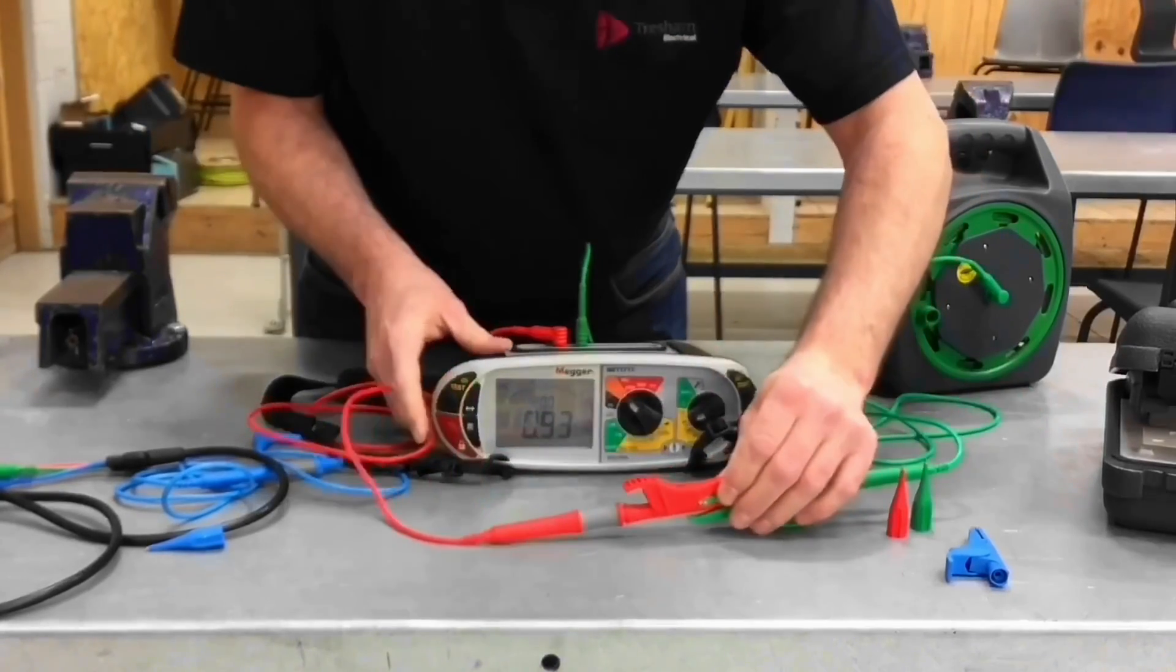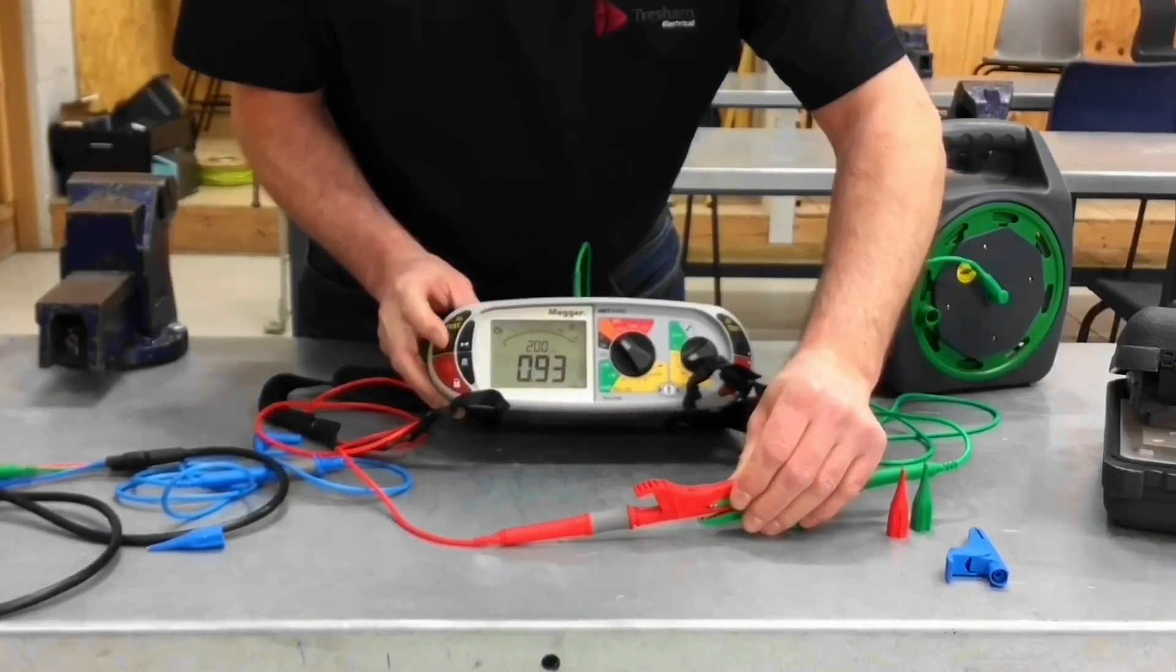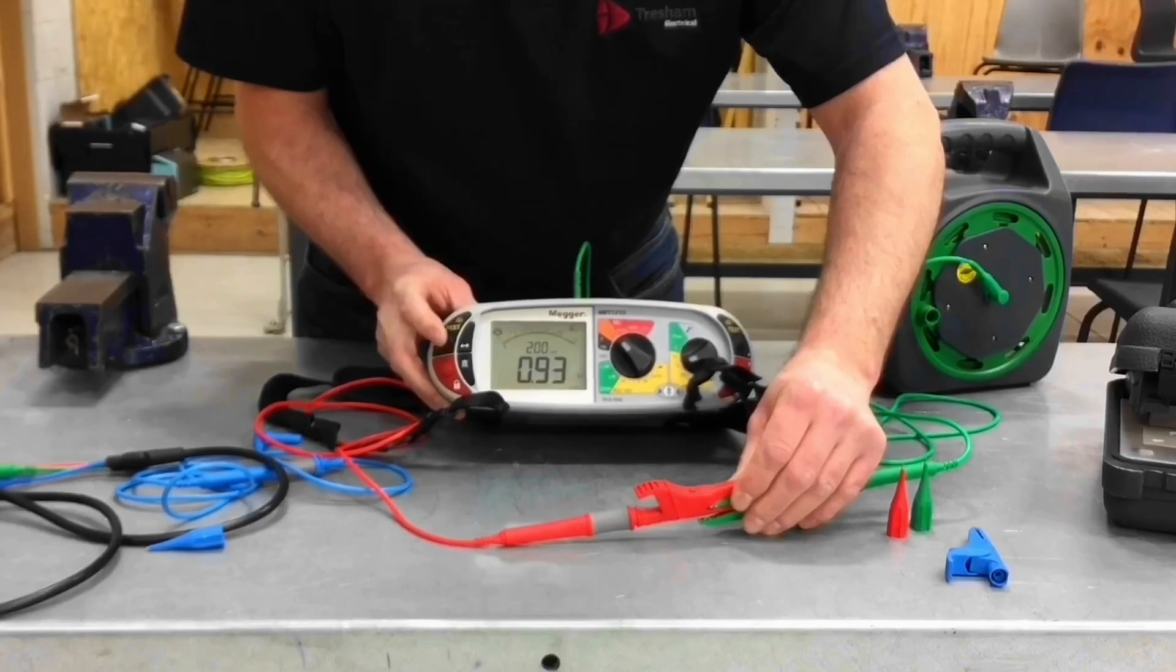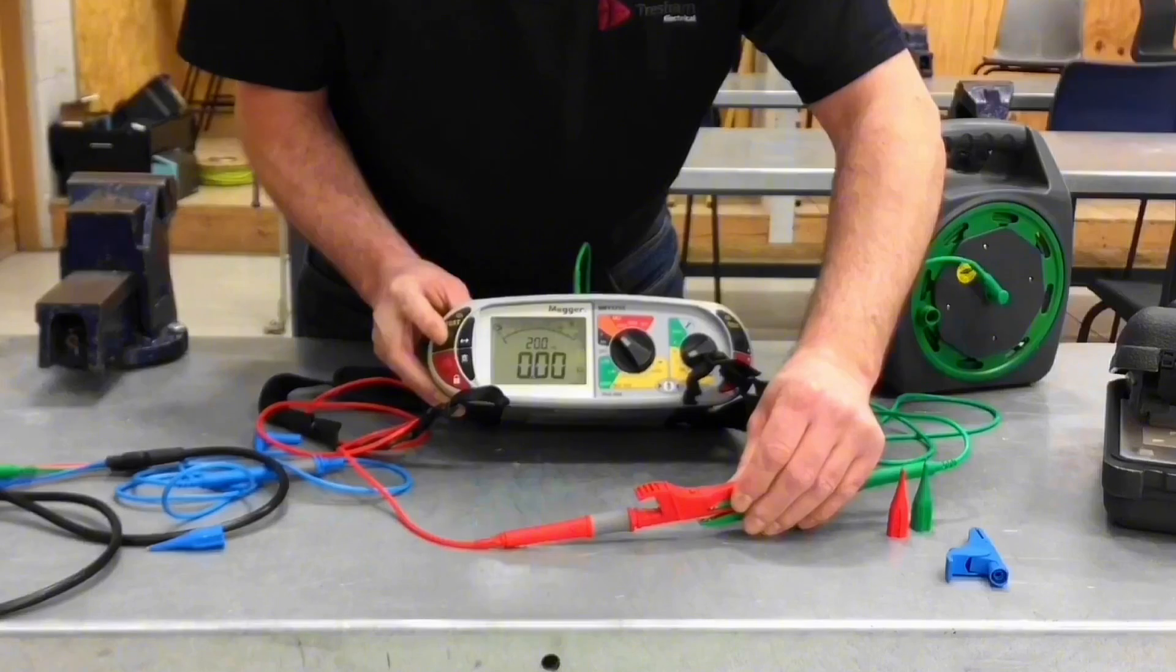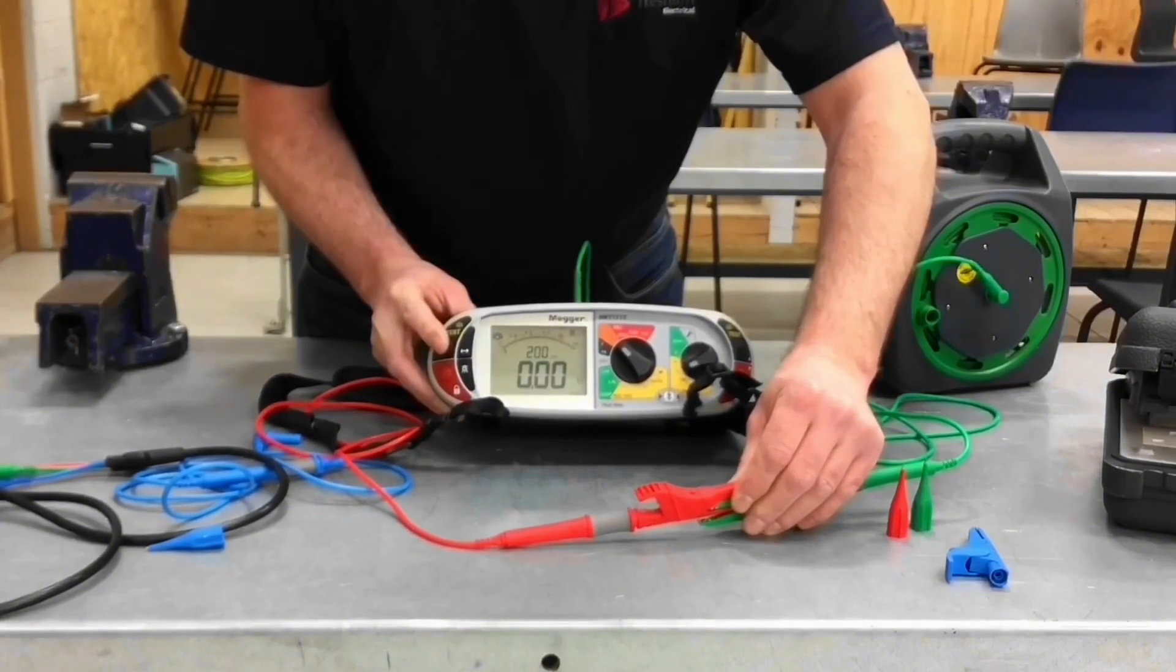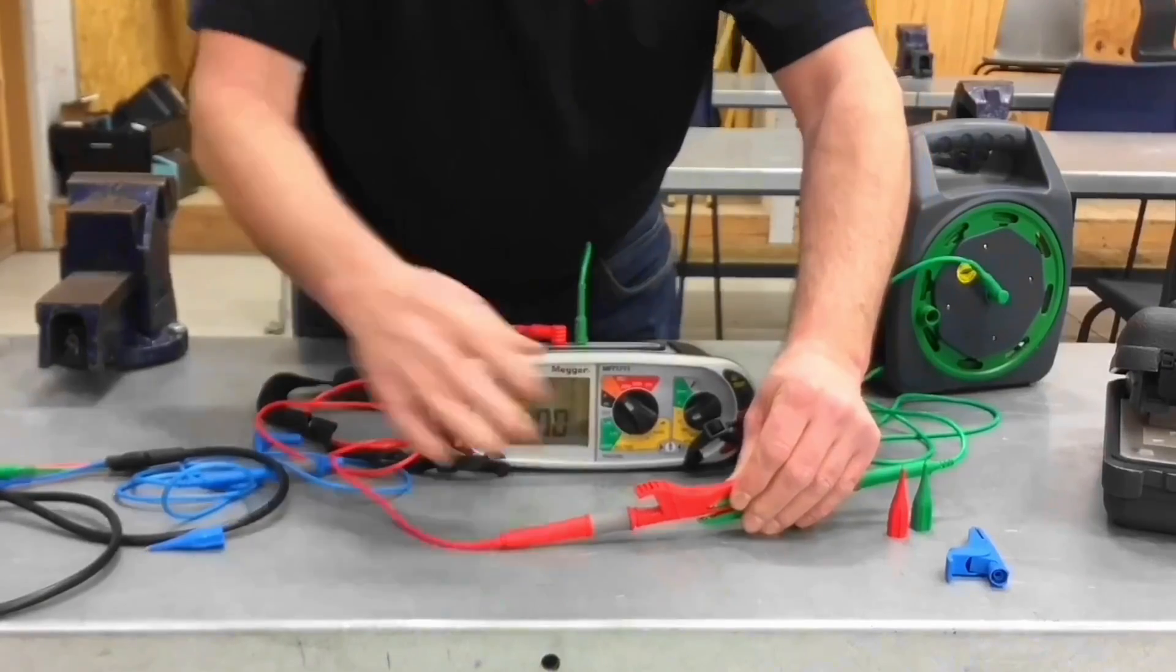A little squeeze, and we see we've got a reading this time of 0.93. Press the test button once. Press the test button again. So this time we've now gone down to 0. So I've zeroed out that 50 meter long lead, allowing me to go off to do R2 testing.